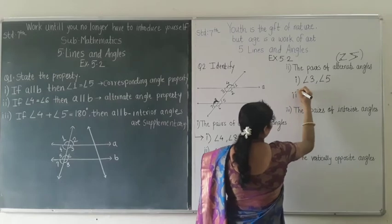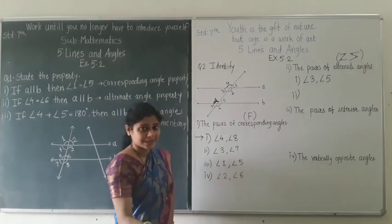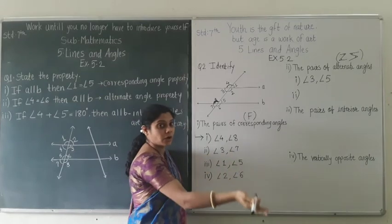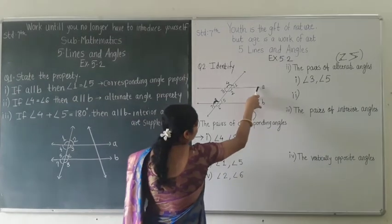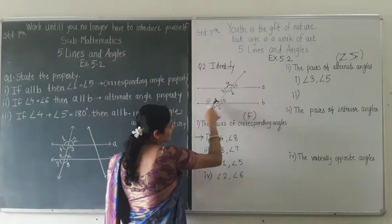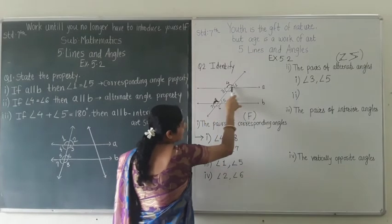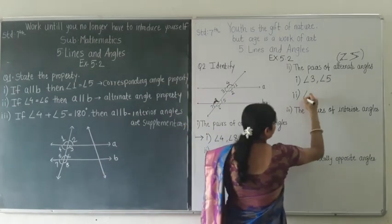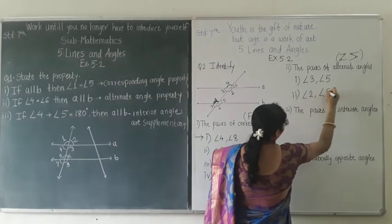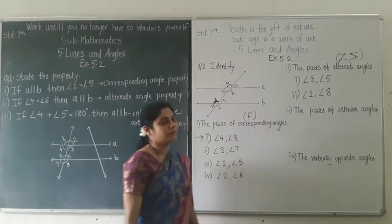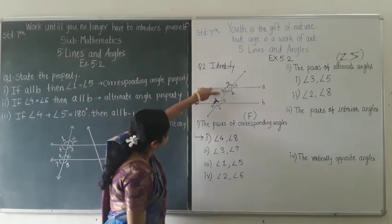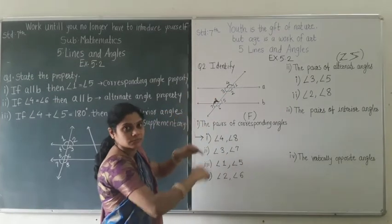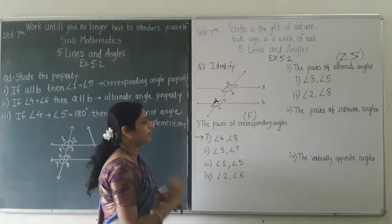For the second pair, look at the mirror image or inverse of the Z-shape. This gives us angles 2 and 8. So angle 2 and angle 8 is the second pair of alternate angles. To summarize: the pairs are angle 3 and angle 5, and angle 2 and angle 8. By crossing these, you can easily identify the alternate angles.